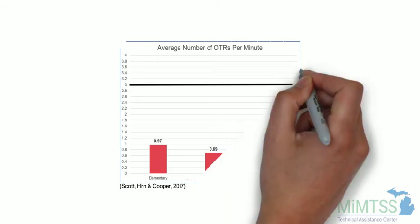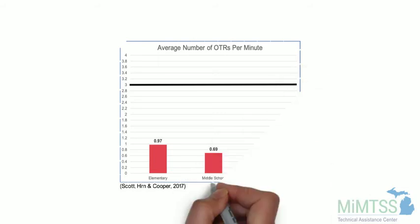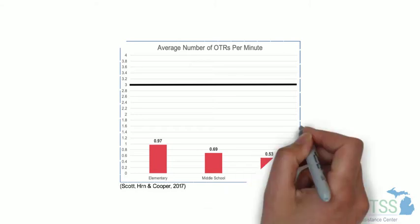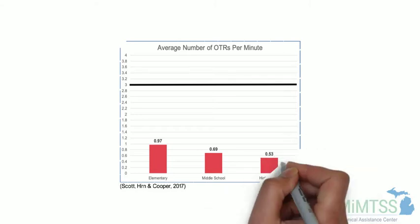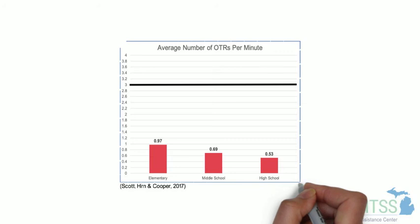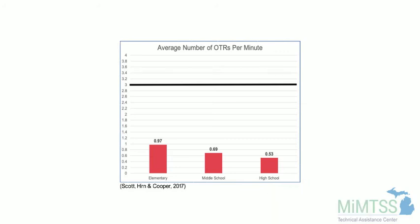One of the many things summarized from these observations were the number of teacher-provided opportunities to respond per minute across various grade levels. The results of the summary are presented in this graph. We see the highest average OTR per minute was at the elementary level and that was still well below the recommendation of three OTRs per minute. The averages for middle and high school were even lower.